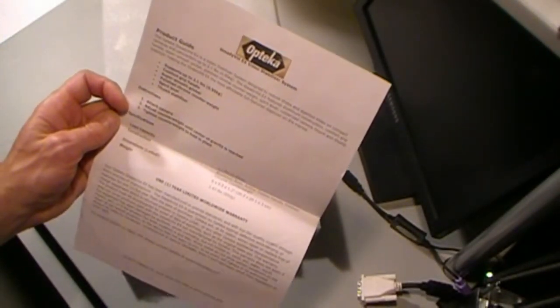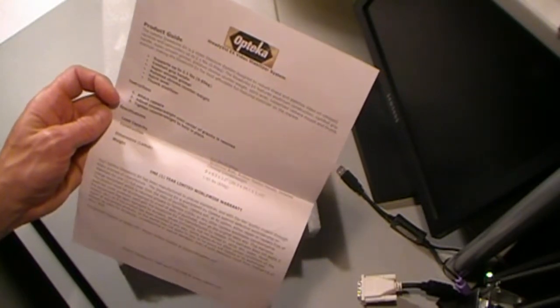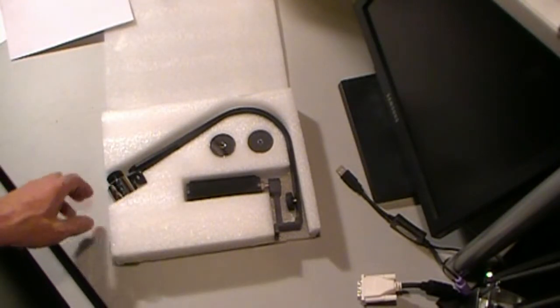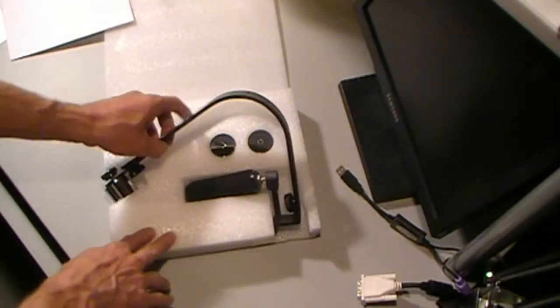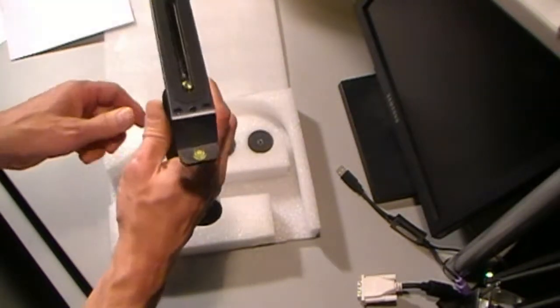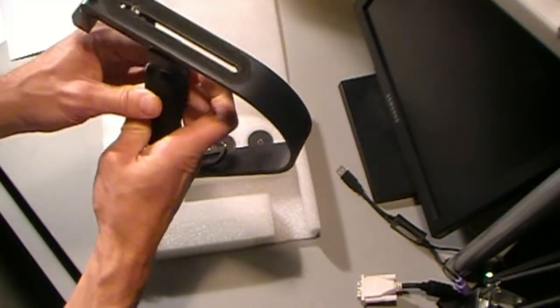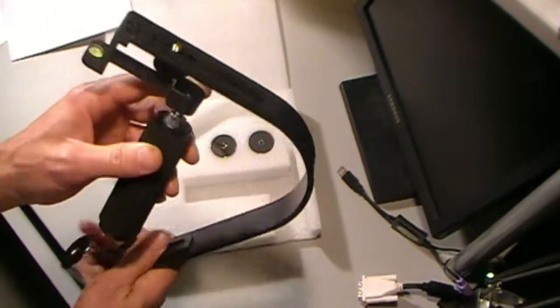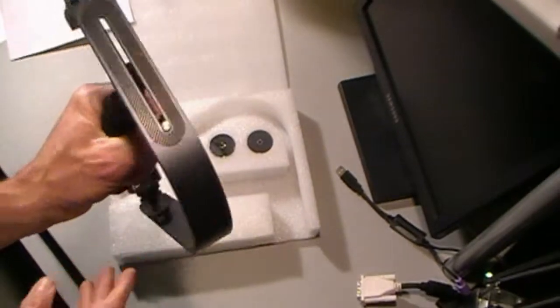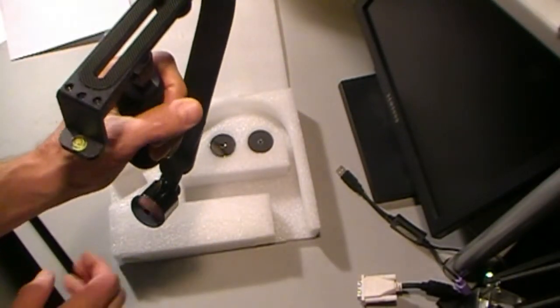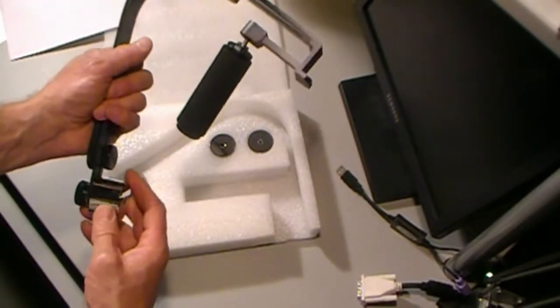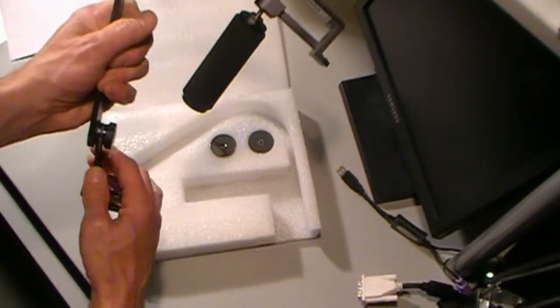So what we've got in here is the stabilizer unit, and it's got a gimbal and feels pretty smooth, really pretty easy. Comes with three weights; weights are just on thumb screws.